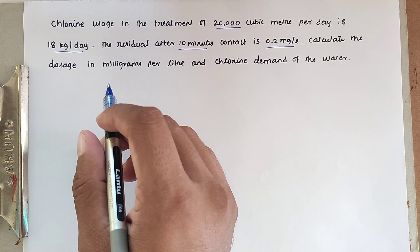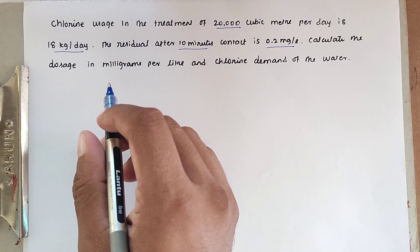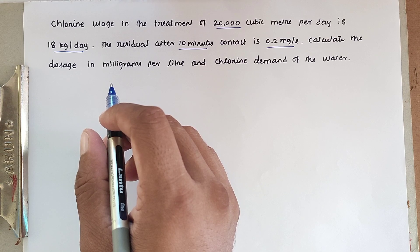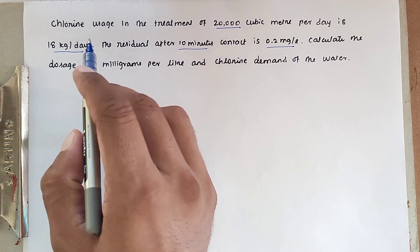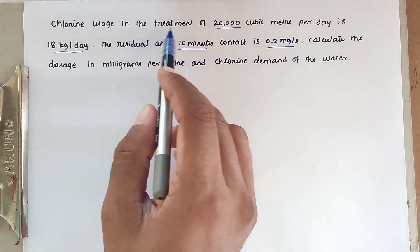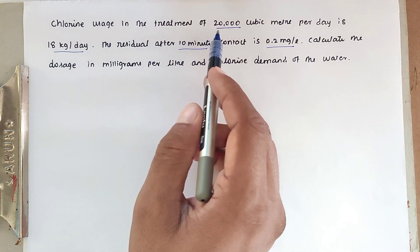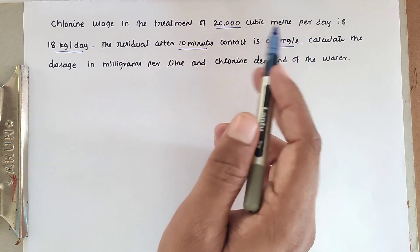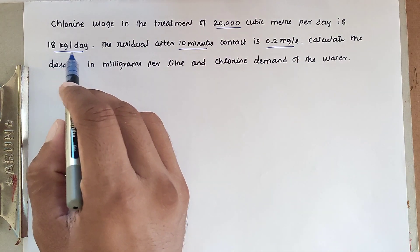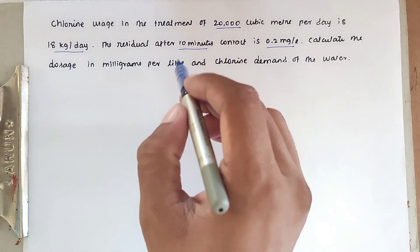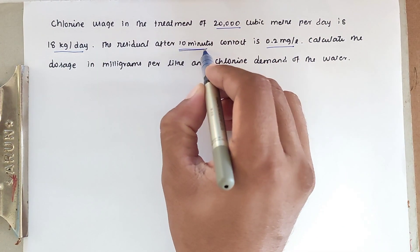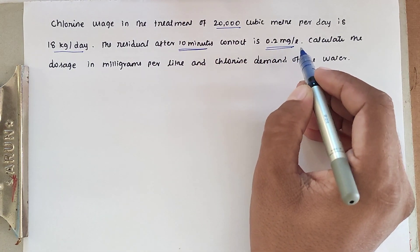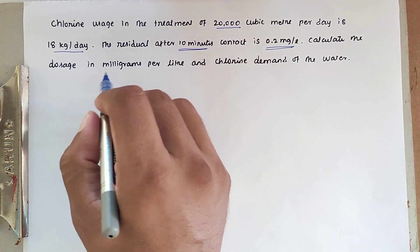Hello friends, welcome to Civil Engineering Exam. Today we are going to see a problem related to environmental engineering in the topic of water treatment. The problem is: chlorine usage in the treatment of 20,000 cubic meters per day is 18 kg per day, and the residual after 10 minutes of contact is 0.2 milligram per liter. Calculate the dosage in milligram per liter and the chlorine demand of the water.